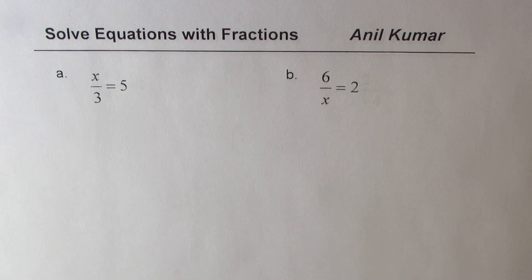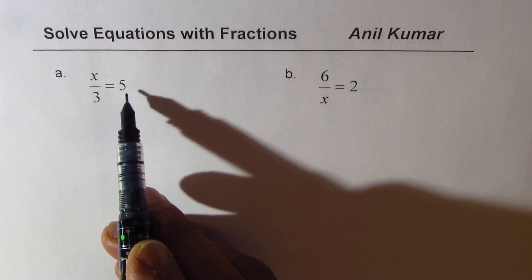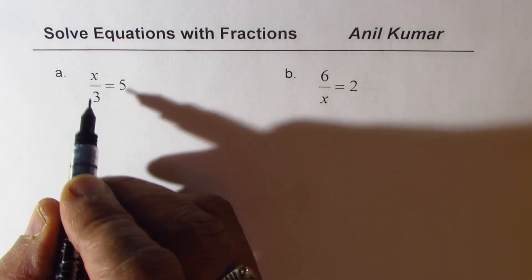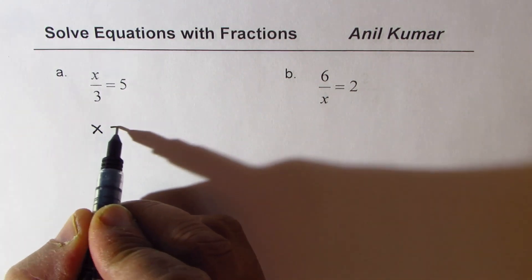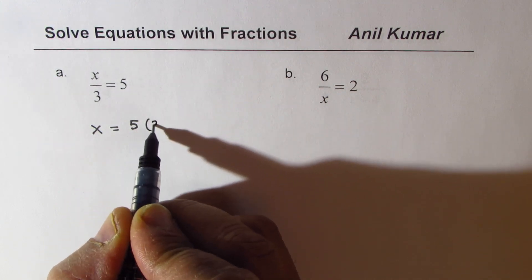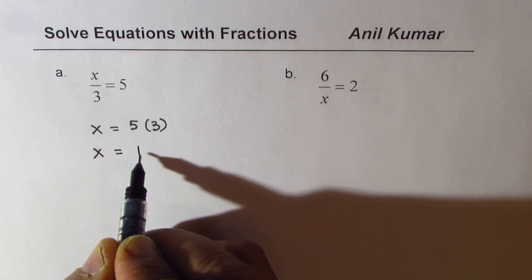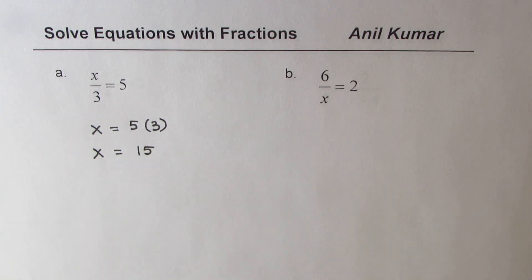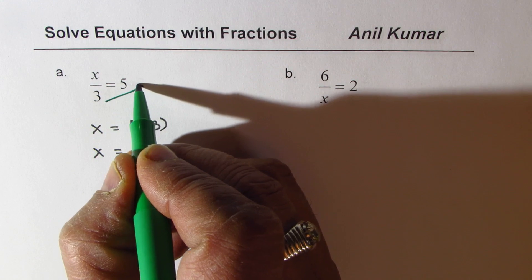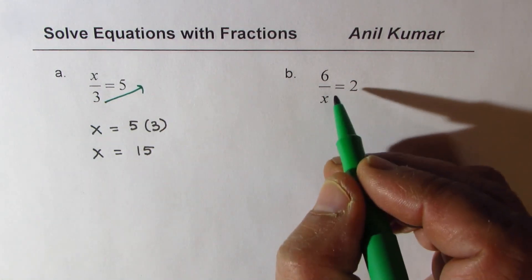Let's begin with the very first question: X over 3 equals 5. Cross multiplication means I will multiply 3 with 5, so we get X equals 15. Here there's only one fraction, so we just multiply by 3 to get rid of it.